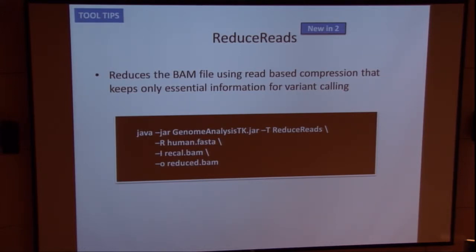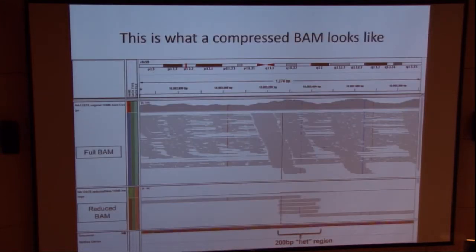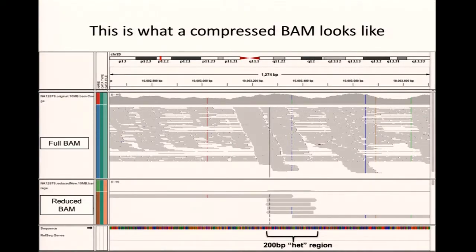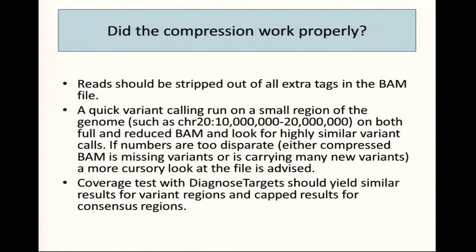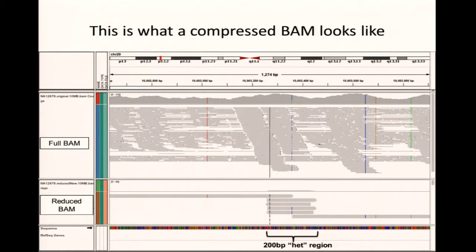So now that you have your compressed BAM file, what does it really look like? This is NA12878, one of our most famous samples. This is about 1,200 bases long — over a kilobase. There are tens of thousands of reads here. You see there's a homozygous SNP, a heterozygous SNP, and some homozygous SNPs. So 1,200 base pairs worth of reads, tens of thousands of reads, get collapsed into six reads. This is an 800 base pair read with your homozygous SNP. Your heterozygous SNP actually gets collapsed into four representative reads — two reads in either direction for the reference allele, and two reads in either direction showing the alternate allele. You do this because directionality is important for finding error covariates.